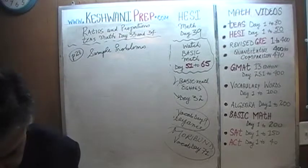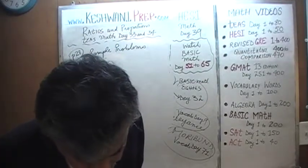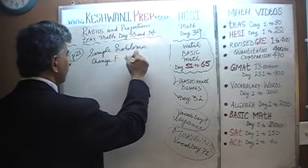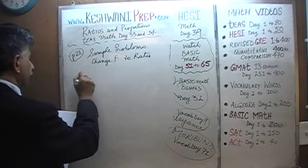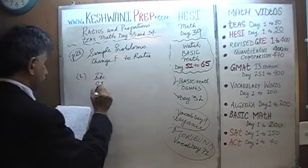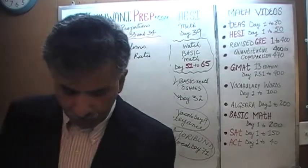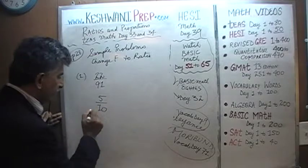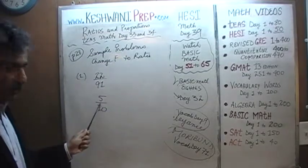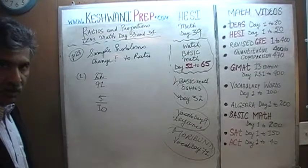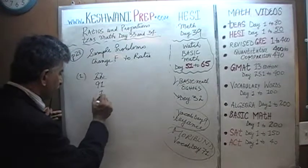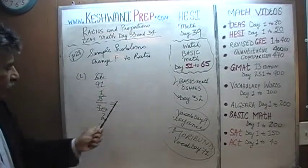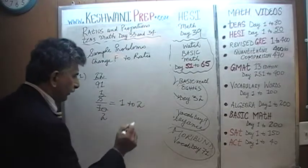Number 1: change the following fractions to a ratio. The first one they give us is 22 over 91. Before we can express this as a ratio, let me give you a simple example. If the fraction is 5 over 10 and they ask us to convert it to a ratio, before we do anything we need to ask ourselves: can we reduce this? We can divide top and bottom by 5 — 5 becomes 1 and 10 becomes 2. So the ratio is 1 to 2.